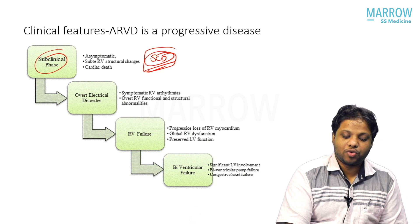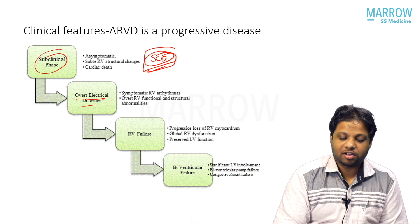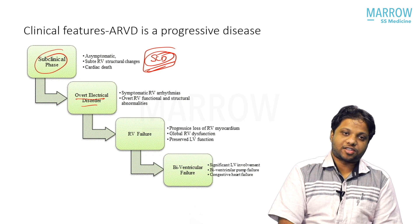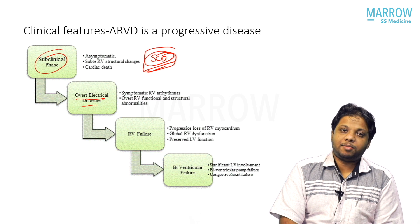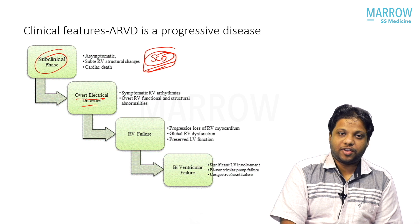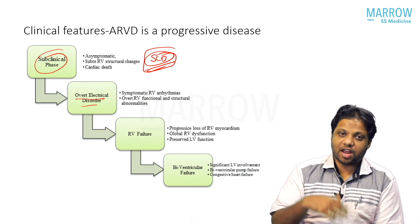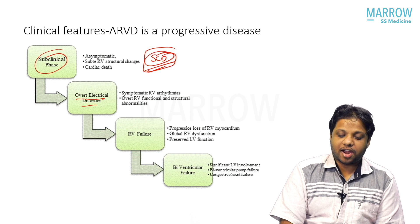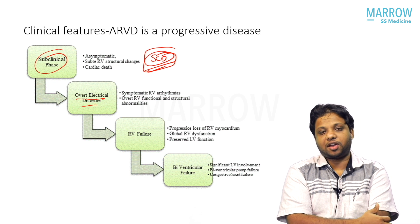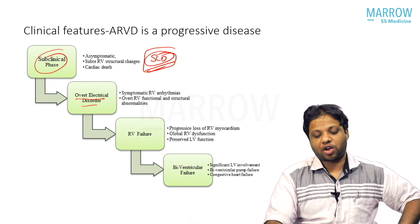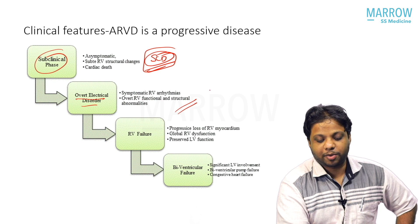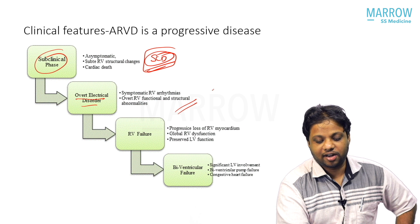Phase two is an overt electrical disorder where the patient presents with RV arrhythmia — typically LBBB morphology with superior axis VT. Atrial fibrillation and various other arrhythmias arising from the RV can occur. Echo or MRI can reveal functional or structural abnormalities, but the primary presentation is electrical.